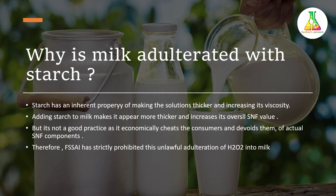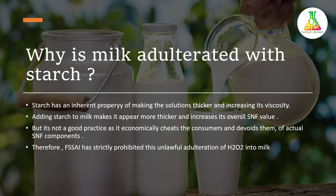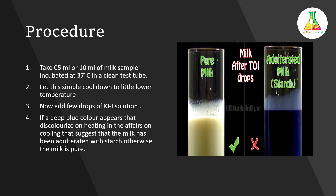SNF value, as I've already told you in my previous video, is nothing but milk solid non-fat — all the solid components of milk excluding the fat. By addition of starch, the SNF value of milk increases and the milk appears thicker. For example, if someone has adulterated milk with water, by addition of starch the milk would regain its viscosity and consistency. Since this is malpractice — it economically cheats consumers and deprives them of actual SNF components like lactose, casein, and lactalbumin — FSSAI has strictly prohibited this unlawful addition of starch into milk.